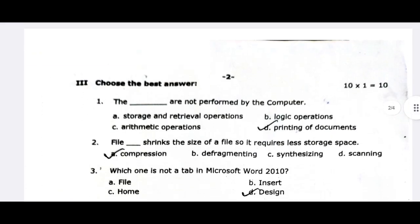The next question is: which operation is not performed by the computer? Storage and retrieval of operations — this is done by the CPU. Logical operations are done. Arithmetic operations are done. The printing of documents is done by the printer, not the computer. The answer is D.